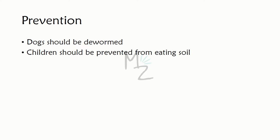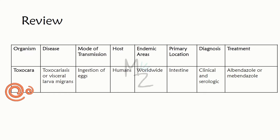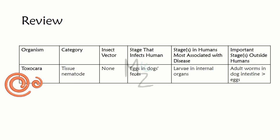Prevention: dogs should be dewormed and children prevented from eating soil. Review of Toxocara: it causes toxocariasis or Visceral Larva Migrans; transmission is via ingestion of eggs; definitive hosts are dogs, accidental hosts are humans; endemic worldwide, especially the US; primary location is the intestine; diagnosis is clinical with serologic tests; treatment is albendazole or mebendazole. It is a tissue nematode with no insect vector; the infective stage is eggs in dog feces; the disease-associated stage in humans is larvae in internal organs.